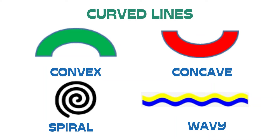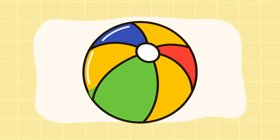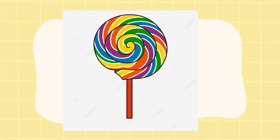So, let's find out the examples of objects that are made using curved lines. First is the ball. The ball is made out of curved lines — specifically, convex and concave. Next, the lollipop. This lollipop is made of spiral line, which is also a curved line.